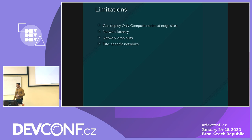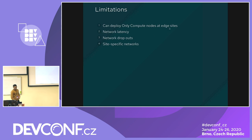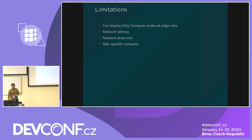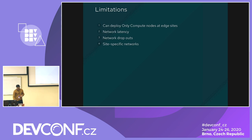Regarding limitations: being a new technology used with OpenStack Cloud for the first time, there are some drawbacks. First, you can only deploy compute nodes on the edge side — no controller, director, or storage nodes at the edge. Second, network latency when hosting applications on compute nodes should not exceed 100 milliseconds. Also, network dropouts and site-specific networks are a concern — the network for edge nodes should be consistent.